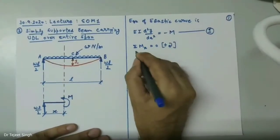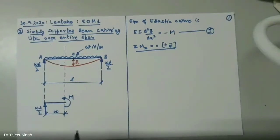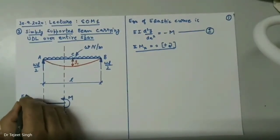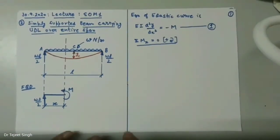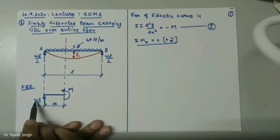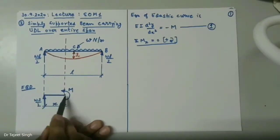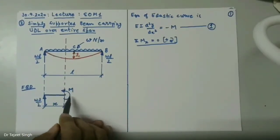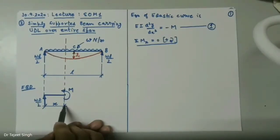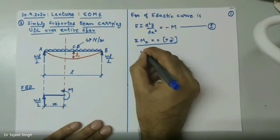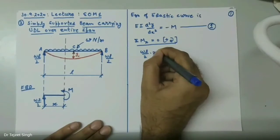Applying this equation on the free body diagram — I write the left-hand side. First, the bending moment due to the upward force, which will rotate this beam segment in clockwise direction about the cut point. So WL/2 is the force multiplied by distance X, giving the bending moment: WL/2 into X.